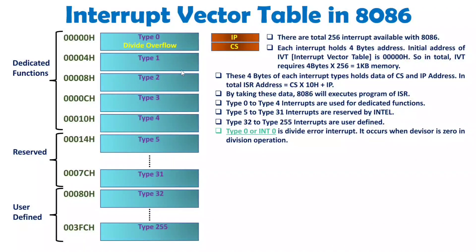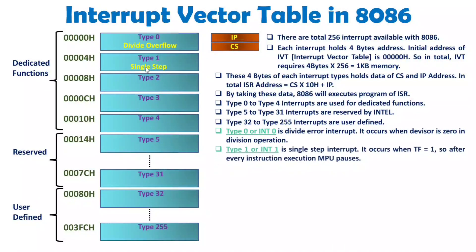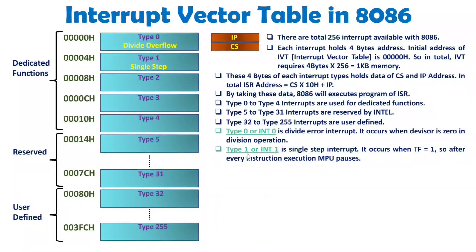Type 1 is the single step interrupt. If you observe the flag register of 8086, it has a trap flag. When the trap flag equals 1, we are in single-step execution mode. In single-step execution, the microprocessor pauses after every instruction, executing the program one instruction at a time. When the trap flag is 1, type 1 (INT 1) interrupt is triggered.